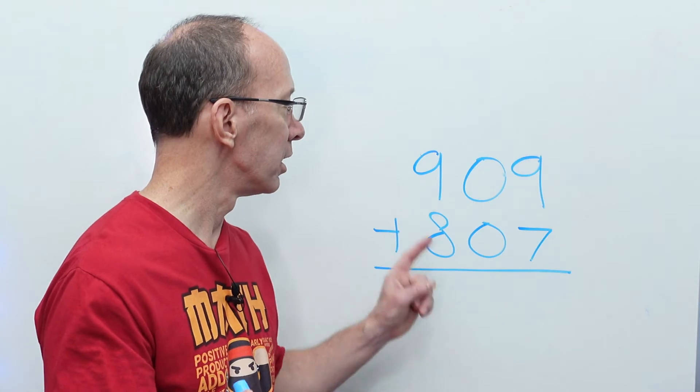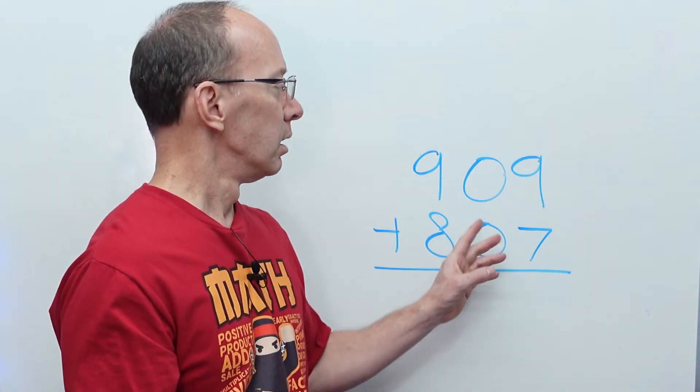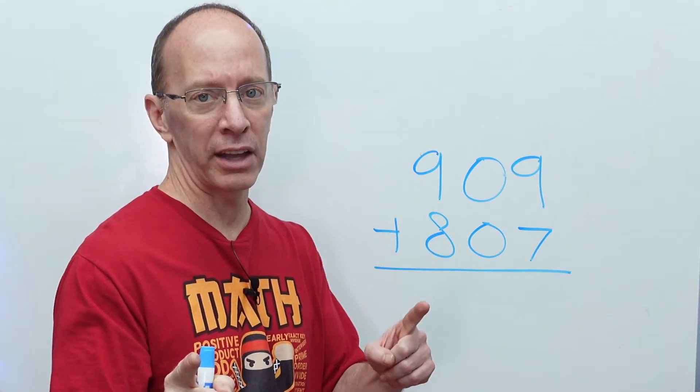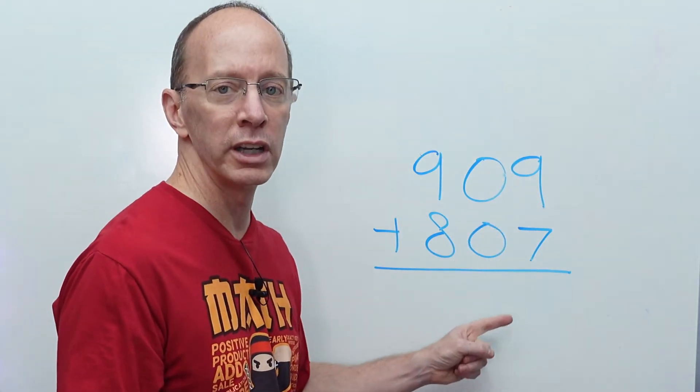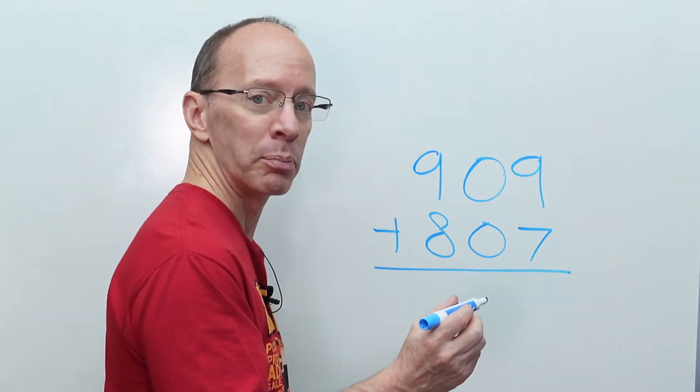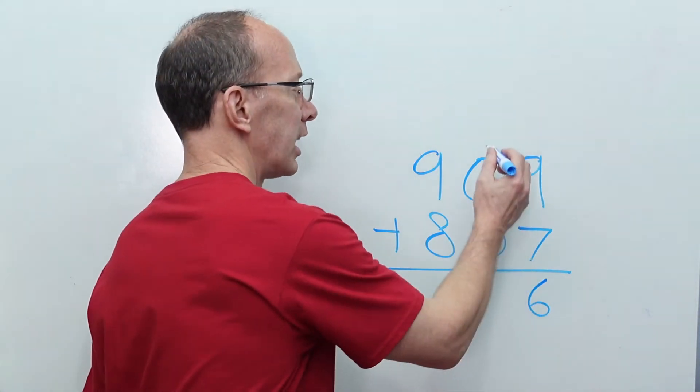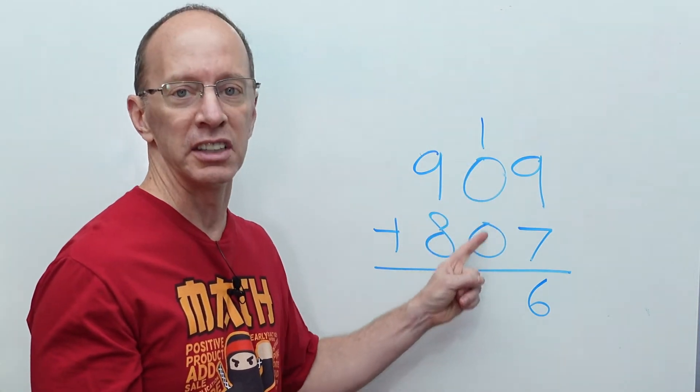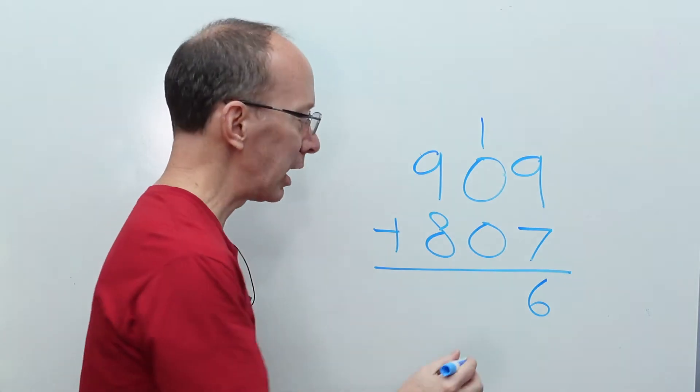All right. We got our next number. 909 plus 807. Got some 0s in there. Don't let it fool you. You can do it. You're a math ninja. I know you can do it. Let's do it. 9 plus 7. What is it? 16. All right. So I put the 6 right here. Throw the 1 over on the top of the tens. Now remember, this is nothing. 0 is nothing. That 1 just goes boom right down to the bottom right here.